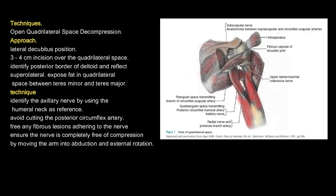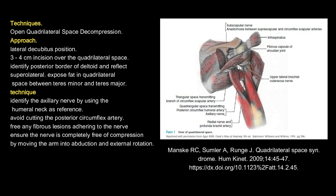For open quadrilateral space decompression, the patient is placed in the lateral decubitus position. A three- to four-centimeter incision is made over the quadrilateral space. The posterior border of the deltoid is identified and reflected superolaterally to expose the fat in the quadrilateral space between the teres minor and teres major. The axillary nerve is identified using the humeral neck as reference, avoiding cutting the posterior circumflex artery. Any fibrous lesions adhering to the nerve are freed, ensuring the nerve is completely free of compression by moving the arm into abduction and external rotation.